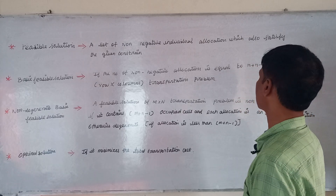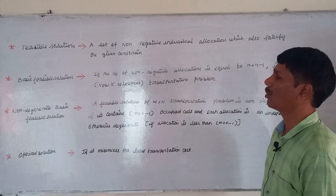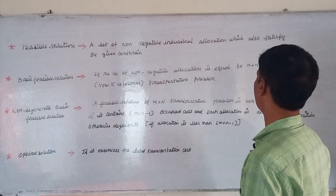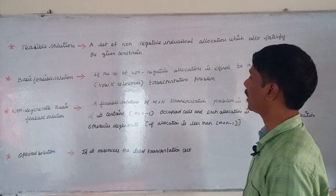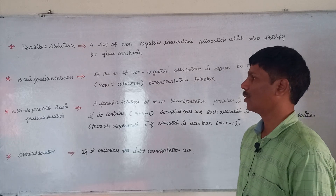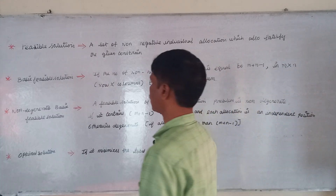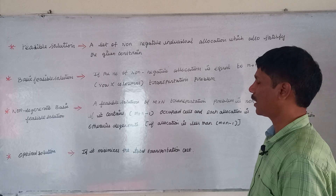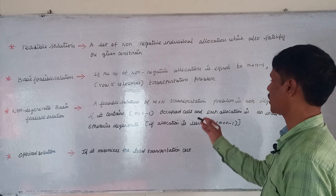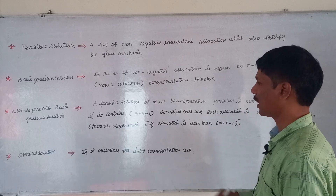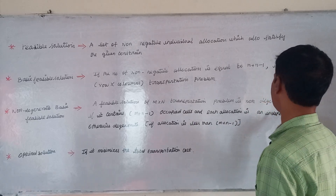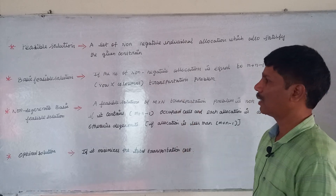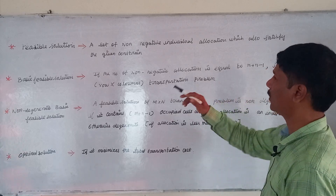An important condition: the number of non-negative allocations must equal m plus n minus 1 for a basic feasible solution, where m and n are the number of rows and columns in the transportation problem. A non-degenerate basic feasible solution for an m×n transportation problem must contain exactly m plus n minus 1 occupied cells, each allocation in an independent position.